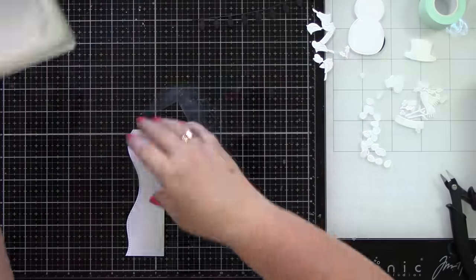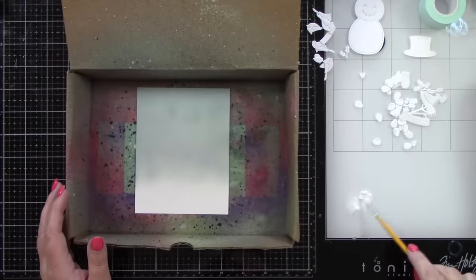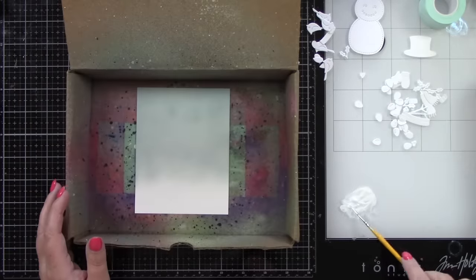Then I have a stitched hillside border that I have die cut, a little snow drift, and did a little bit of ink blending just at the bottom with the Speckled Egg.